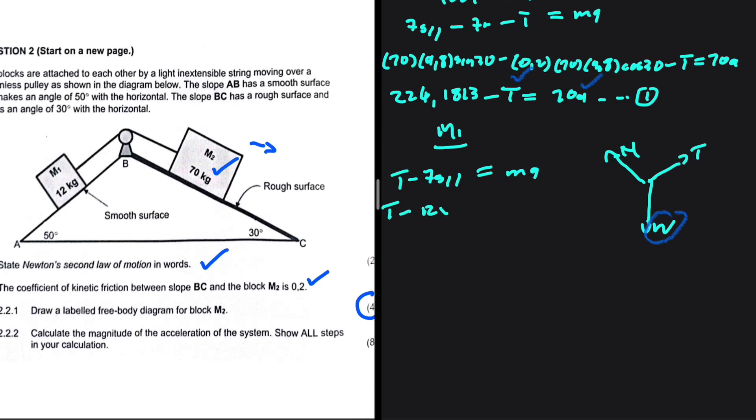The mass is 12 multiplied by 9.8 multiplied by sin θ. The angle of inclination is 50°. So we're going to have sin 50° being equals to 12a. So we're going to have the tension minus 90.0868 being equals to 12a. This is our equation 2.